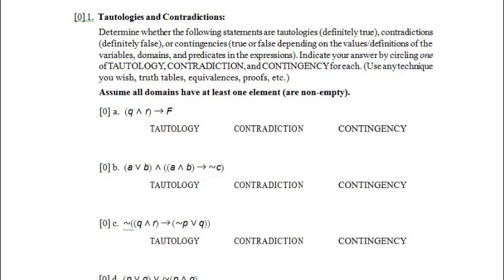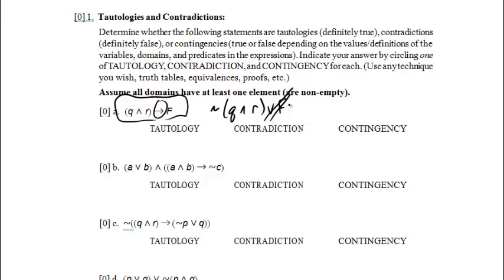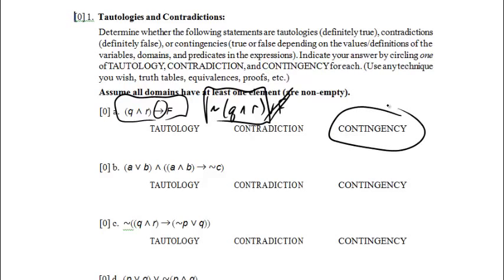Let's start with the first one. There are just two variables in this statement, so you could certainly write a truth table — it would only be four rows long. Instead, I'm going to use logical equivalences to simplify. I'll get rid of the conditional, giving not q and r, or false. Oring anything with false just gives you that thing back, leaving us with not q and r. That will be true some of the time and false some of the time, so that's a contingency.